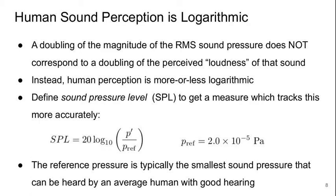Human sound perception is not linear — instead it's logarithmic. So if we double the magnitude of the RMS sound pressure, that does not correspond to a doubling of a person's perceived loudness of that sound. Instead, we have this more or less logarithmic response. So we define the sound pressure level as a non-dimensional unit, which allows us to get a measure that tracks human perception a little bit more accurately.